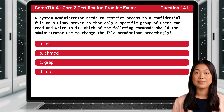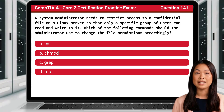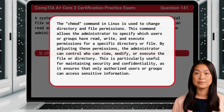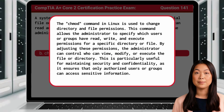Question 141. A system administrator needs to restrict access to a confidential file on a Linux server so that only a specific group of users can read and write to it. Which of the following commands should the administrator use to change the file permissions accordingly? The answer is B. chmod. The chmod command in Linux is used to change directory and file permissions. This command allows the administrator to specify which users or groups have read, write, and execute permissions for a specific directory or file.